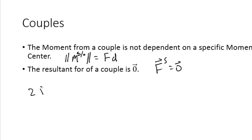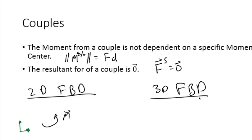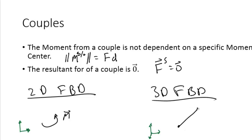The resultant force from a force couple is zero. In a 2D free body diagram, the moment from a couple is represented by a curled arrow. In the 3D free body diagram, the moment from a couple is represented by a double-headed arrow.